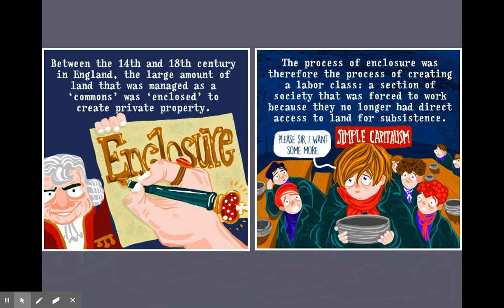Between the 14th and 18th centuries in England, large amounts of land managed as the commons were enclosed to create private property. The process of enclosure therefore created a labor class — a section of society forced to work because they no longer had direct access to land for subsistence. We start to see more food, but also a huge class divide, which is going to lead to revolutions in France in the 1700s and just before that in the United States.